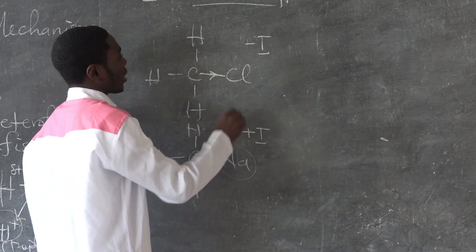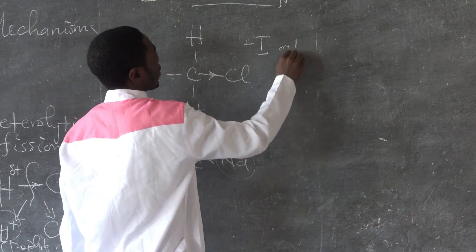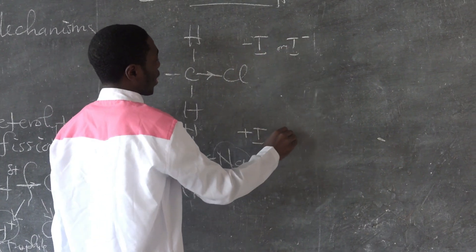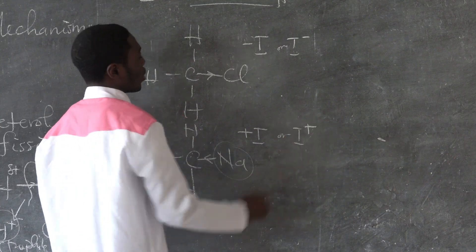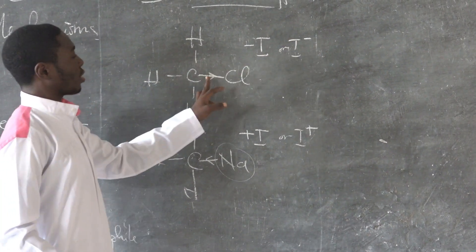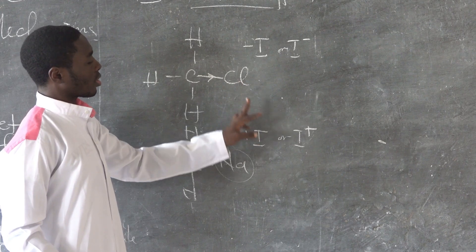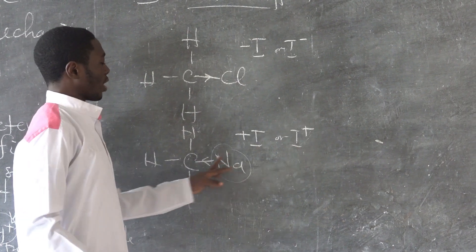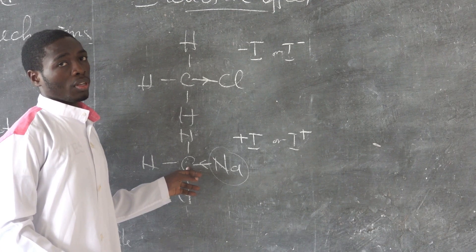We can write these as I⁻ for the negative inductive effect, where the group withdraws electrons from carbon, and I⁺ for the positive inductive effect, where electrons are donated to the carbon atom.